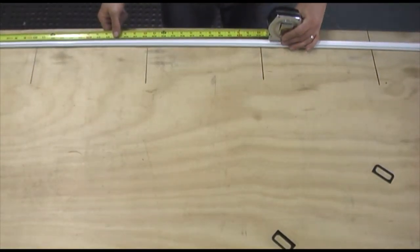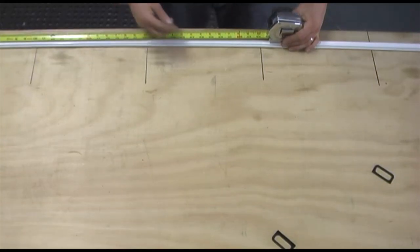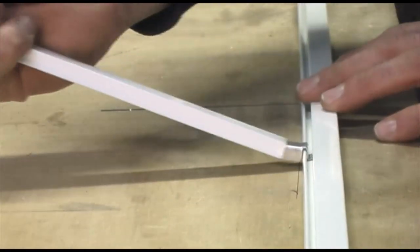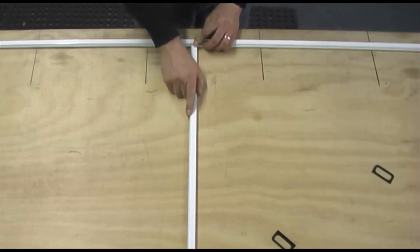If your screen needs a crossbar, measure to where you would like the crossbar to be and place this small crossbar clip into the spline channel. Now, slide on a piece of crossbar frame onto your crossbar clip. Finally, simply roll in your spline over the clip.